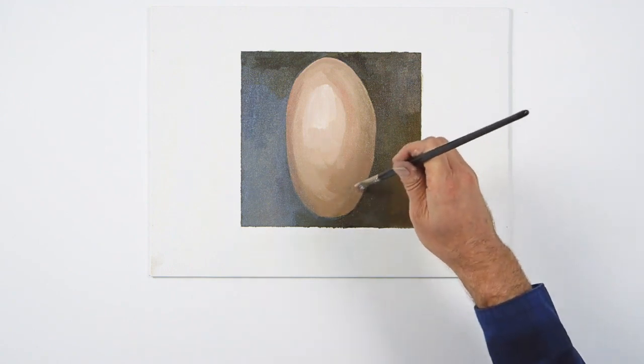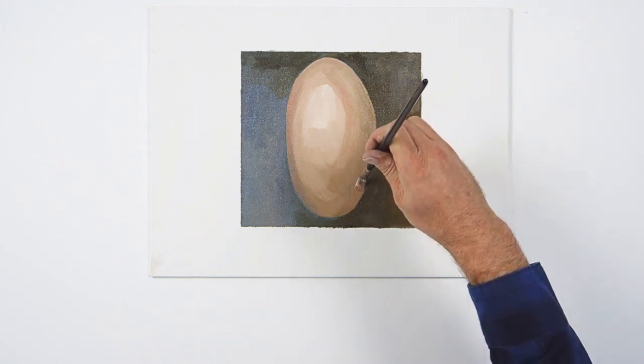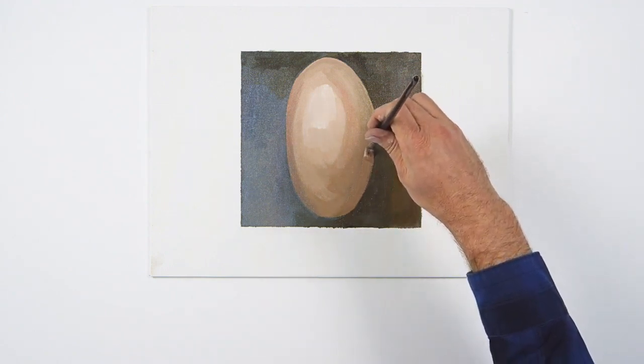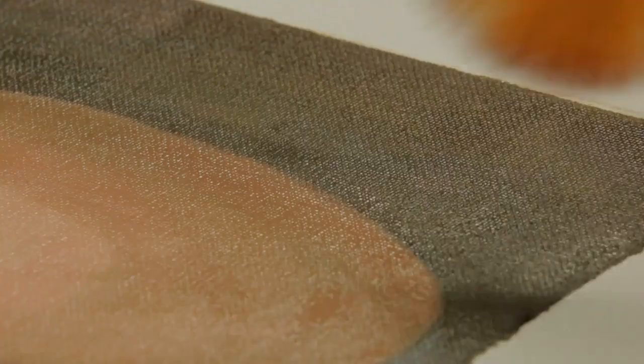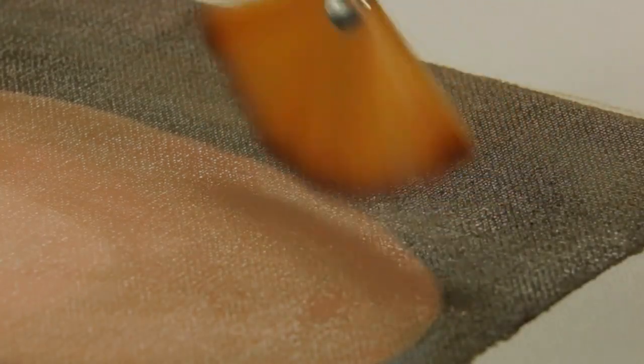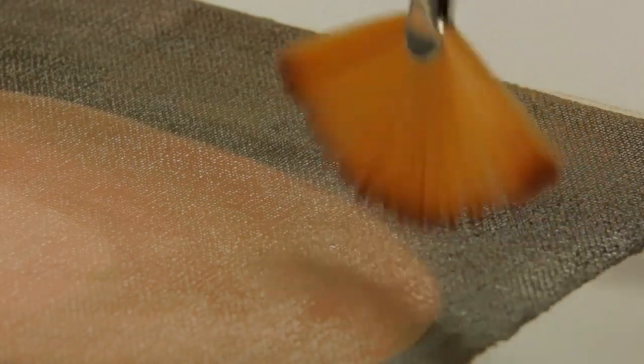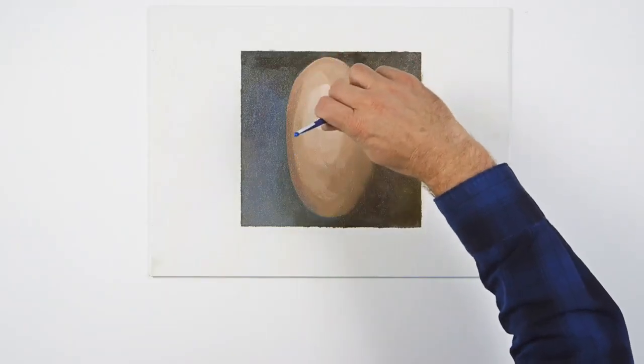By fusing the edge with the space around it, we can turn the edge into the background and place greater emphasis on the center of the form to bring it forward. This is sfumato.